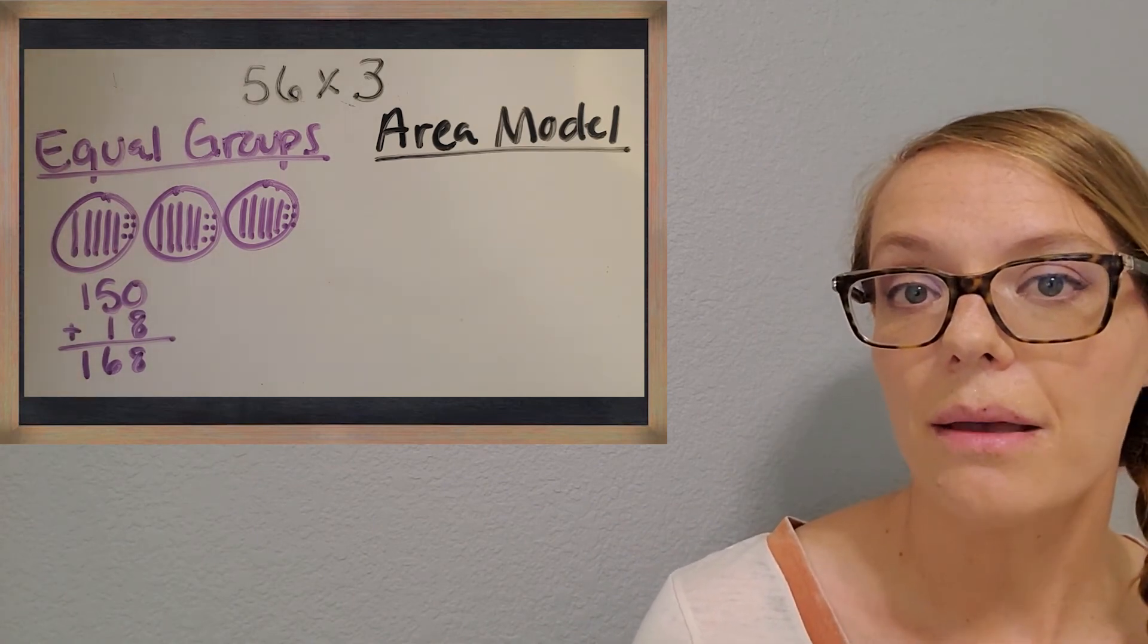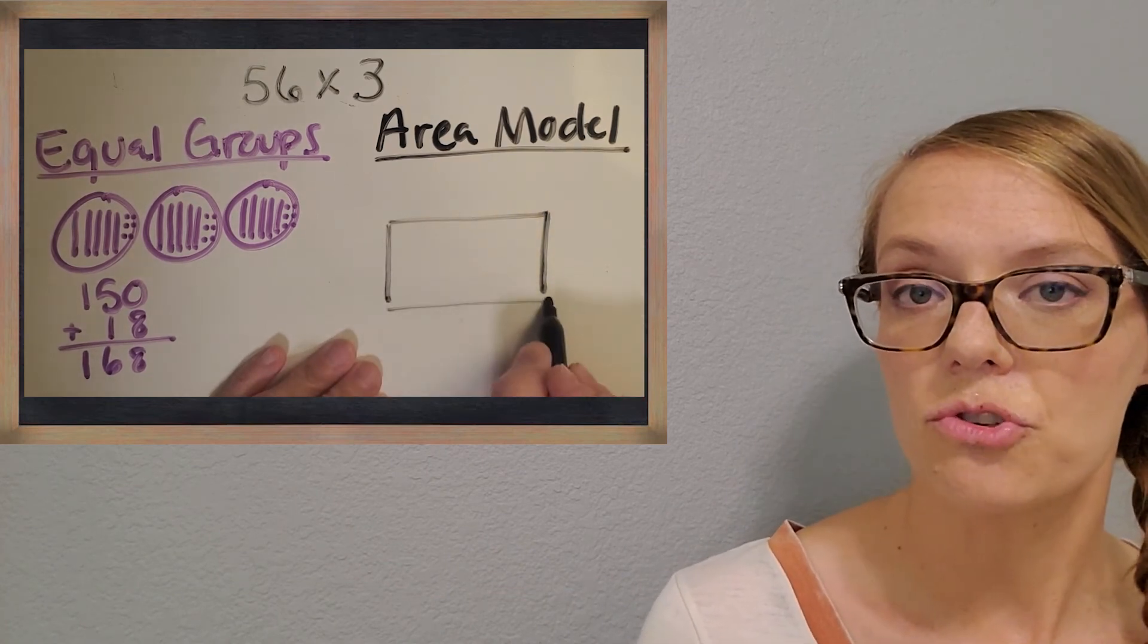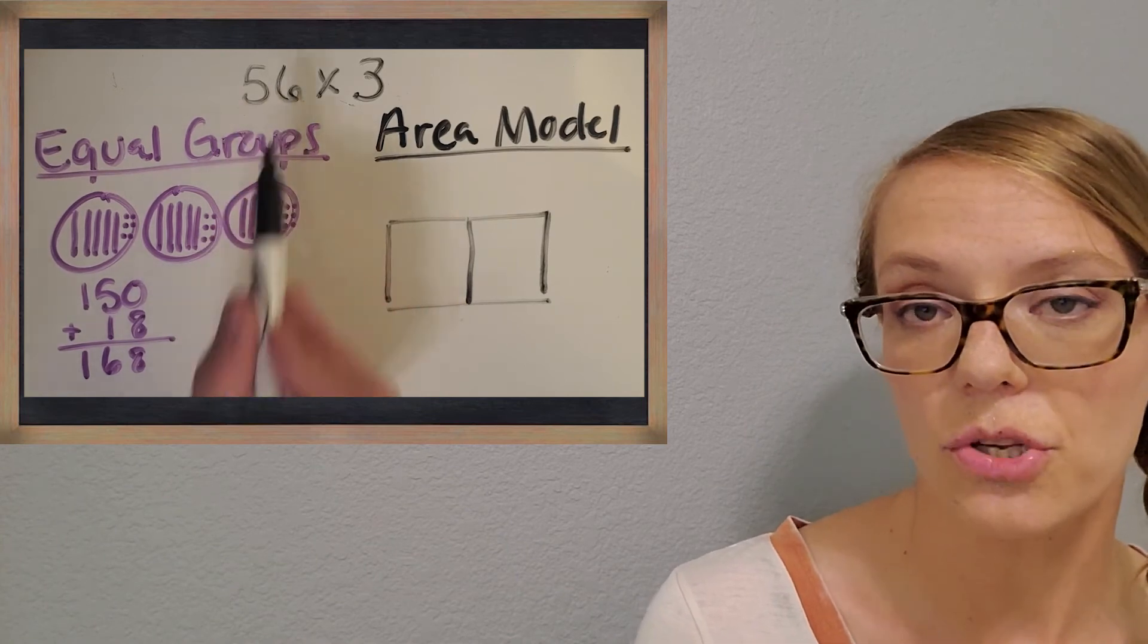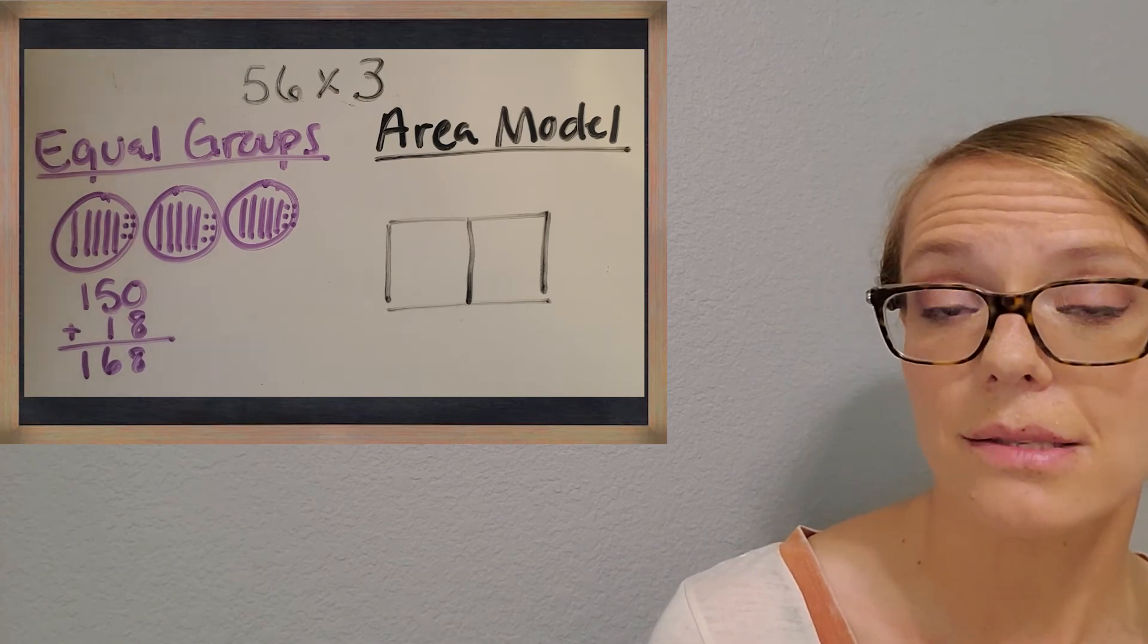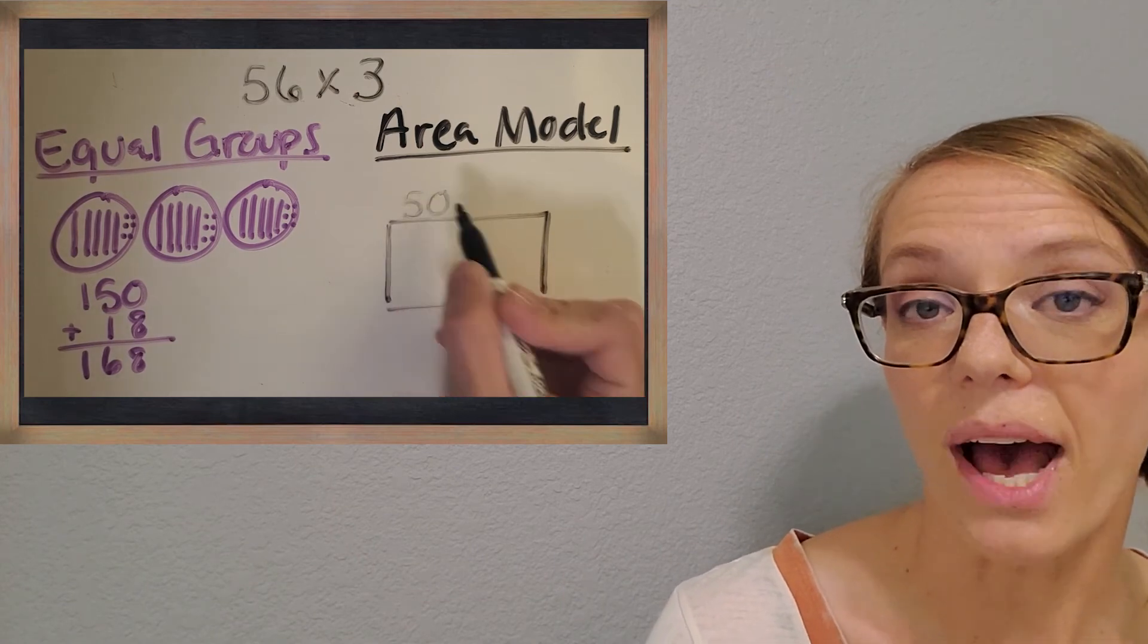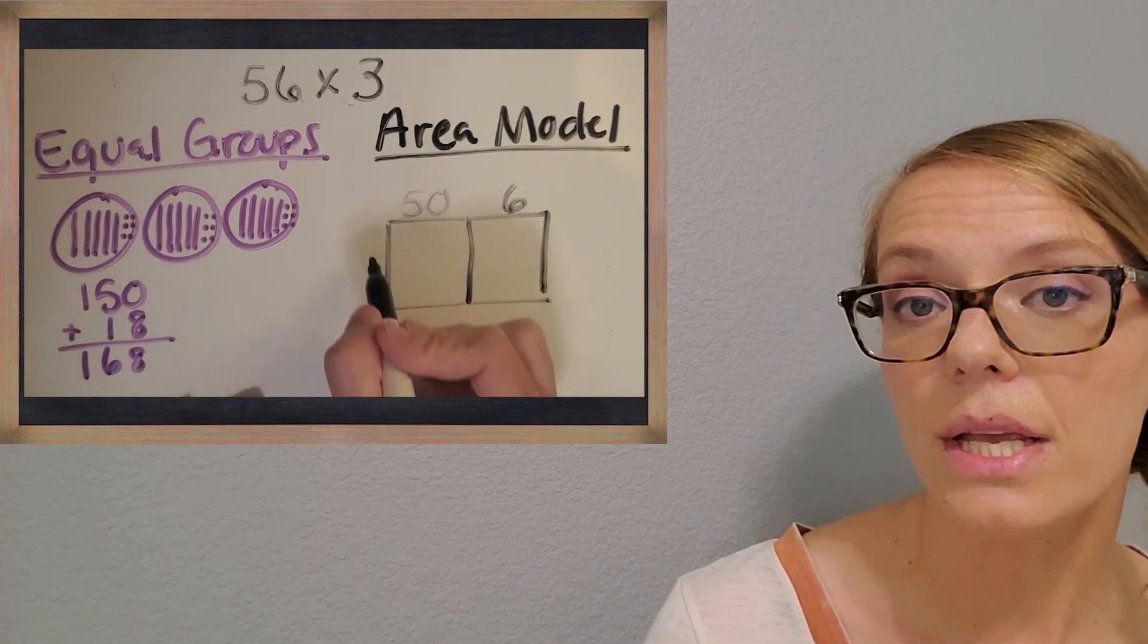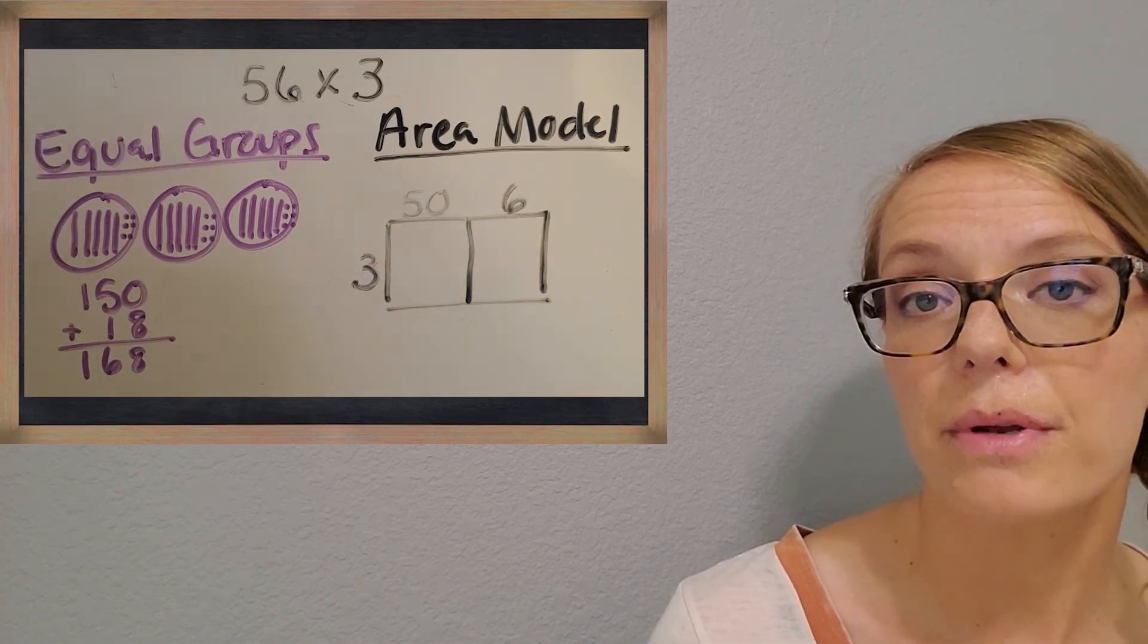Now let's try building an area model for this one too. Let's see if it works for a bigger problem like this. So draw your rectangle. And I'm going to have to split it up into two parts since we have a two digit number. And how would I write 56 with place value? Awesome. The five is really worth 50 since it's in the 10s place. So we're going to put 50 there. We're going to put six on the other part. And we're multiplying this by three. So we're going to put three on the side.